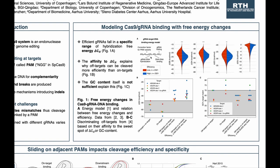We modeled Cas9 guide RNA binding using free energy changes, and the model includes three main energies. One is ΔGH, which is the hybridization energy — how well the guide RNA and the DNA hybridize together. Then there are two energy penalties: one for opening the DNA, and one for unfolding the guide RNA, which could be folded into a secondary structure that needs to be opened up.